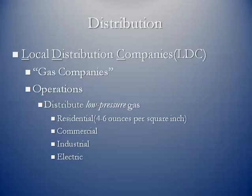Local distribution companies, otherwise known in the business as LDCs, these are your gas companies. Whoever your local gas company is, is an LDC. They're going to distribute the gas to the various end users connected to their systems. Their primary operation is to distribute low pressure gas. When we talked about transmission pipelines, they move the gas at very, very high pressures. Mainline transmission pipelines can be running 500 pounds per square inch to as much as 1,500 pounds per square inch.